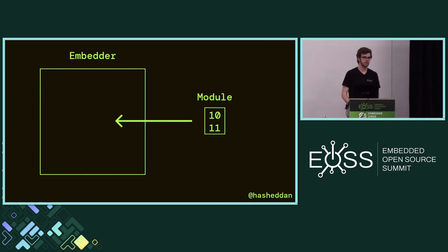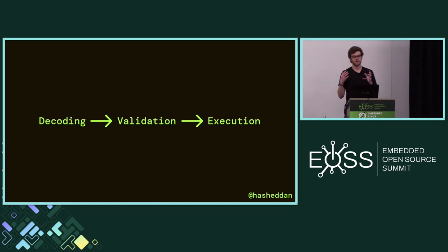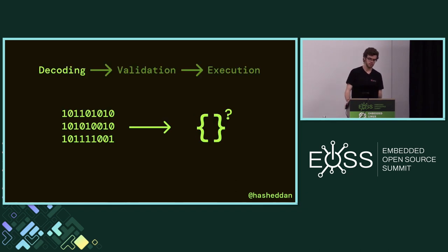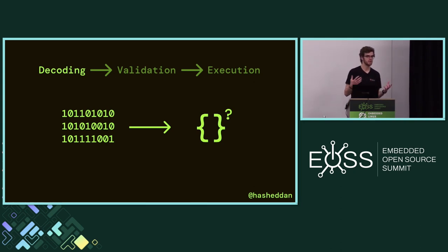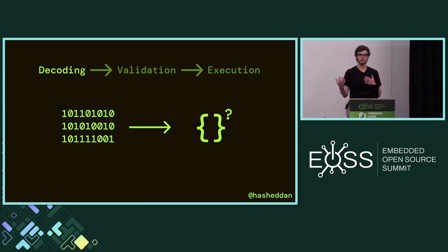Once you get that WebAssembly module, you go through a number of steps in order to actually invoke code that is in that module. Those steps are broadly: decoding, validation, and execution — and these are all core parts of what makes WebAssembly useful in some cases. Looking at decoding, this is runtime defined. So depending on what WebAssembly runtime you're actually using, the representation of a module instance is defined by the runtime, so it may look different.